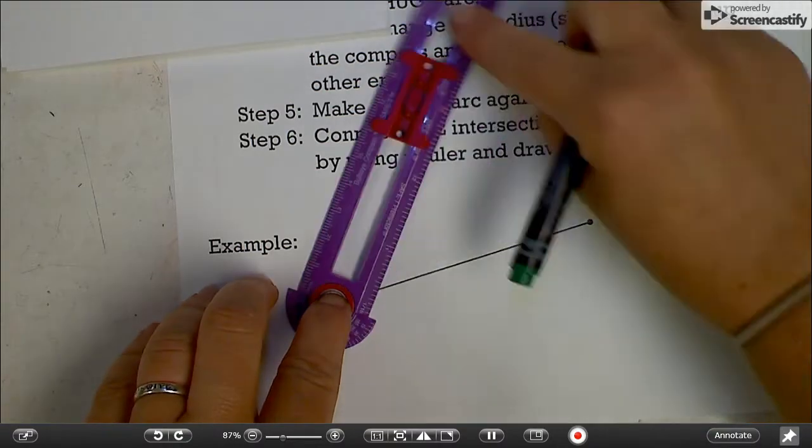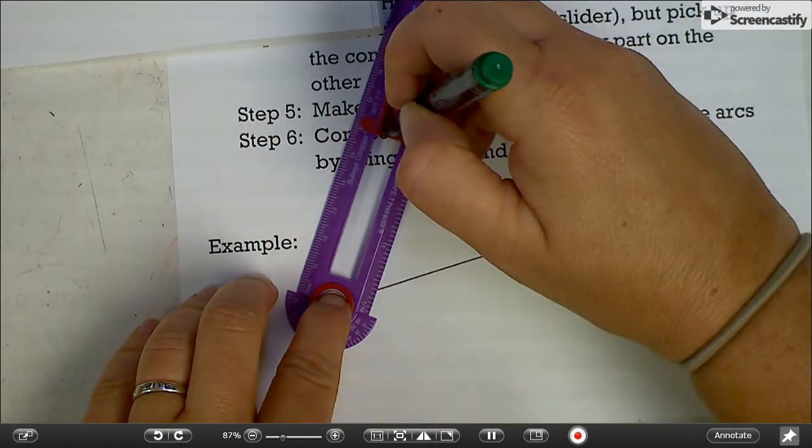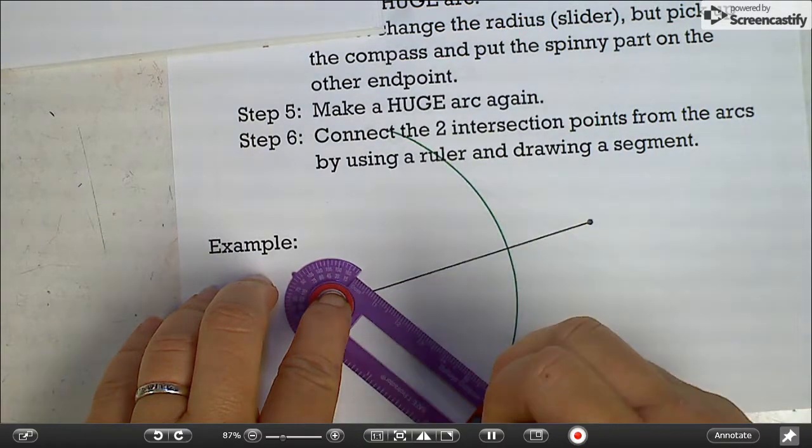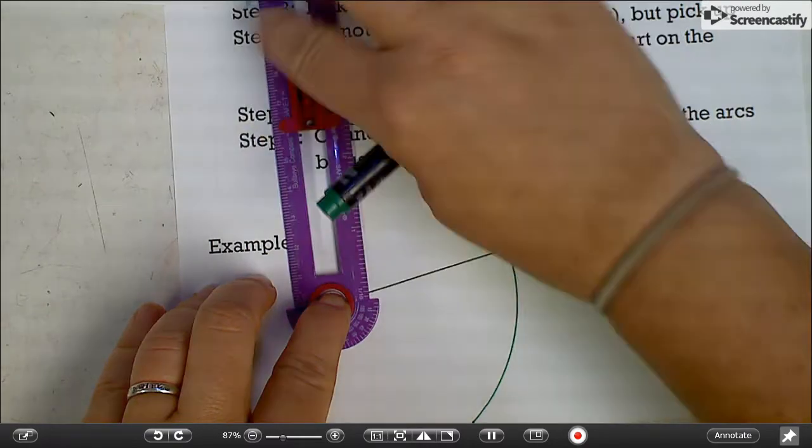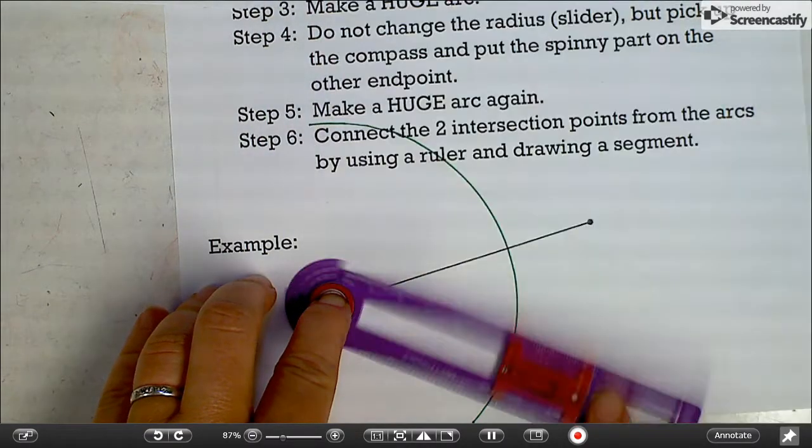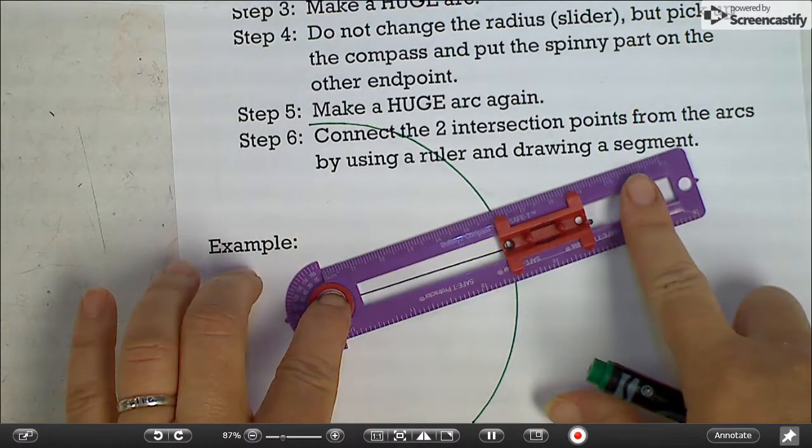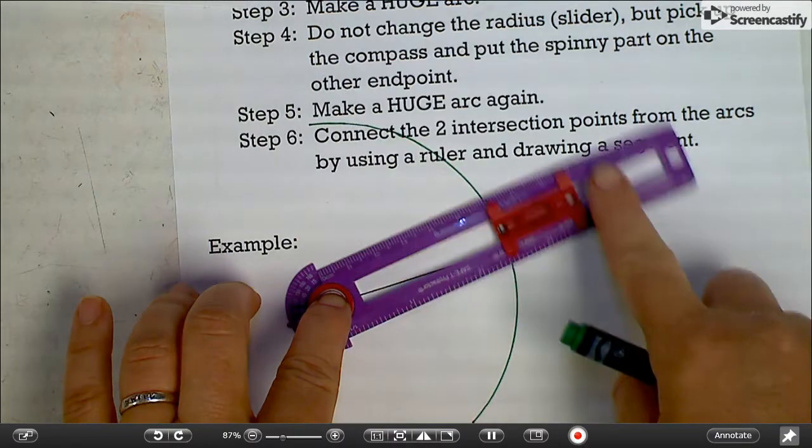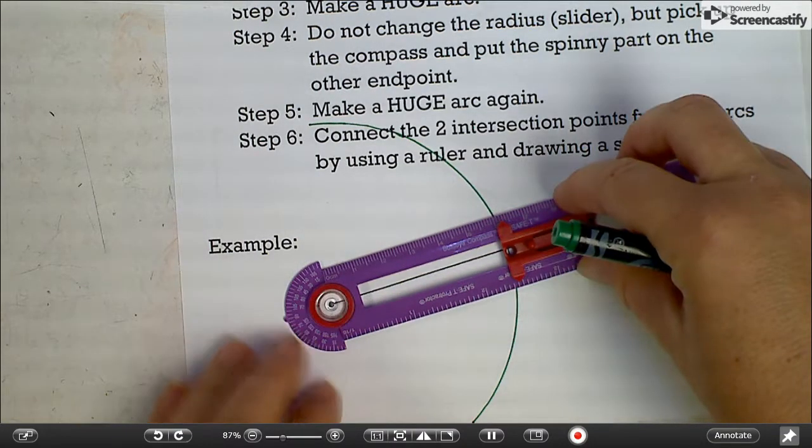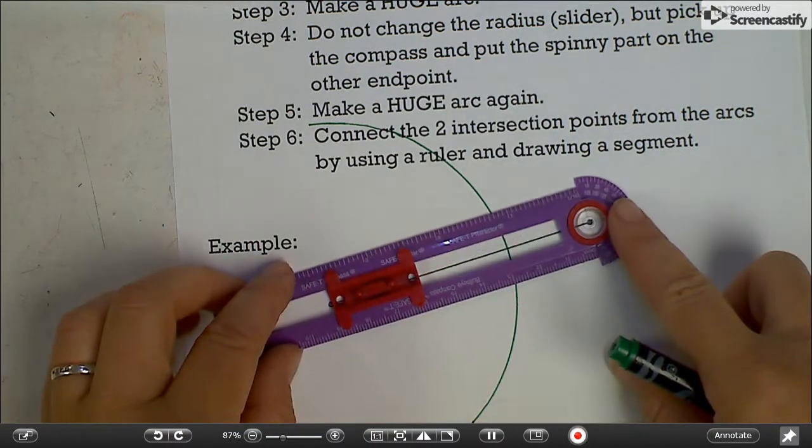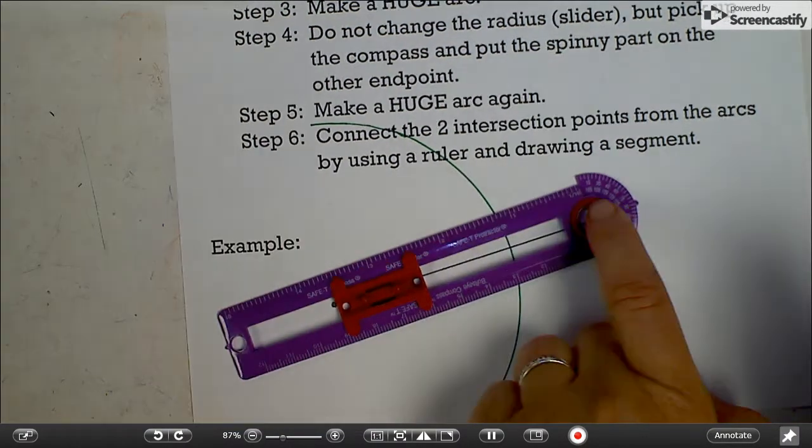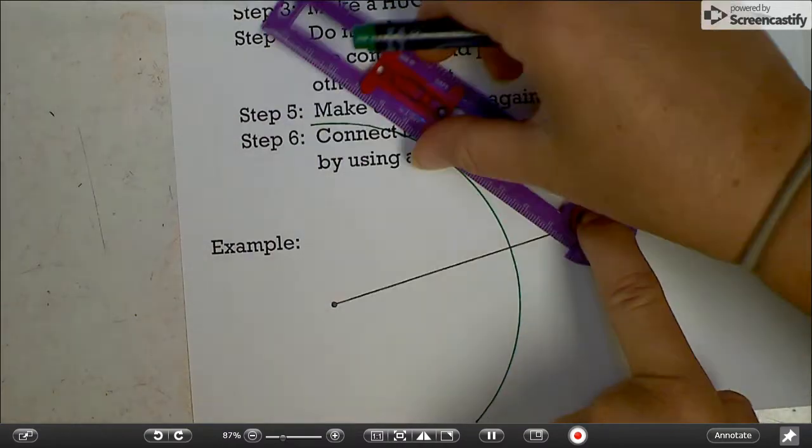And you're just going to bring your compass up and draw a big arc up and down. Just want to make sure you go far enough. You don't need to take your compass and go back and forth like this. That's going to mess it up. So make sure you just kind of make one nice arc when you can. And then you're going to take your compass and turn it so that you put the spinner on the other end point. Don't change the radius and make an arc again.